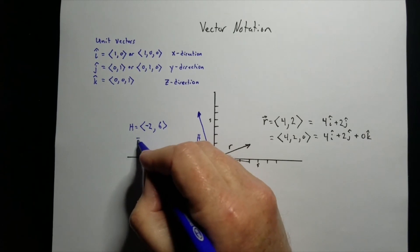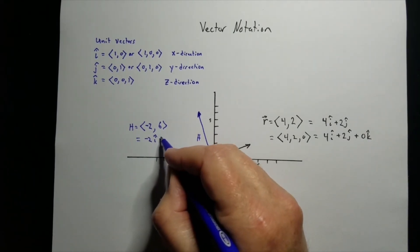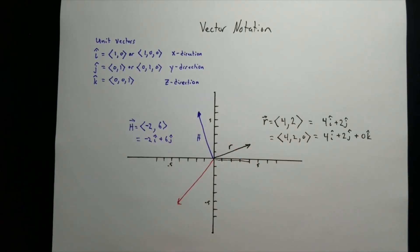Again, that would be minus 2i plus 6j to get that one.